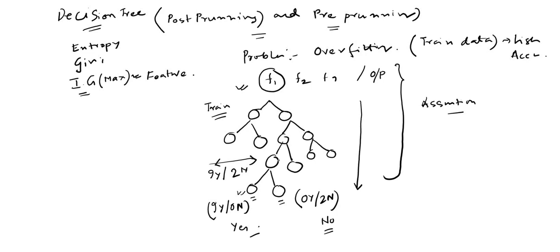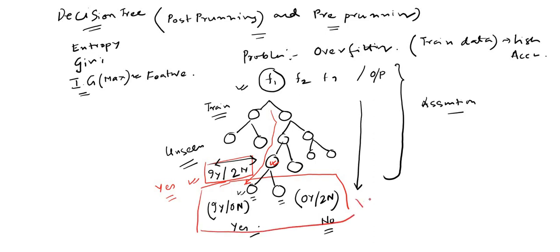But this happens only if you allow the tree to grow completely. If you allow the tree to grow completely, you will get this kind of tree structure. Now consider you have some unseen data and it follows this tree. You go through several branches to take a decision — but think about this: if you go up to a certain point, you don't need the remaining part because from that point itself you can take a decision, since the majority is Y. So we want to prune that part.